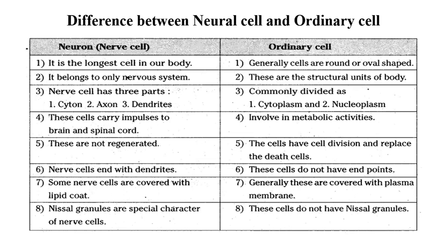The nerve cells end with dendrites, while ordinary cells do not have a defined endpoint and are present in a rounded shape. The nerve cells are covered with an outer lipid coat, while ordinary cells are covered with a plasma membrane. A special type of granule known as Nissl granules is present in neurons but not in ordinary body cells. This is the difference between the nerve cell and an ordinary cell.